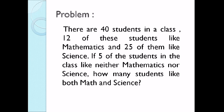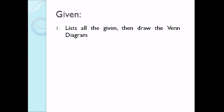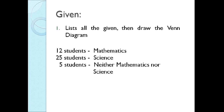Okay, sabayan nyo akong sagutan yung ating given problem. So there are 40 students in a class. 12 of these students like mathematics and 25 of them like science. If 5 of the students in the class like neither mathematics nor science, how many students like both math and science? So paano natin masasagutan yung problem using the set operations and Venn diagram? So let us list all the given to draw the Venn diagram. So 12 students like mathematics, 25 students like science, 5 students neither, a total of 40 students.